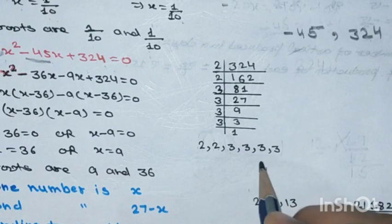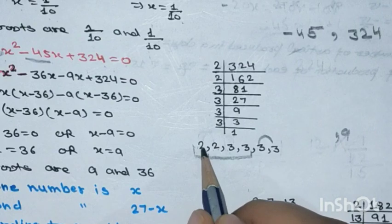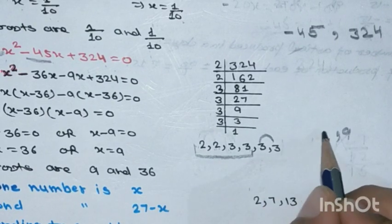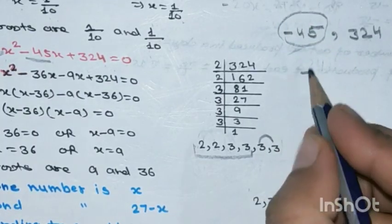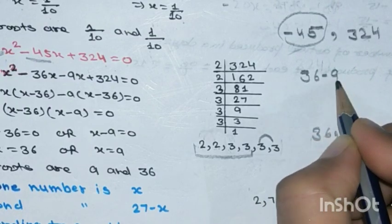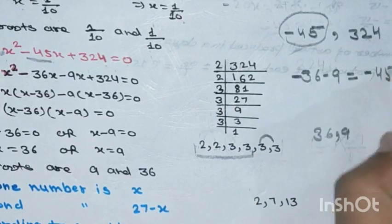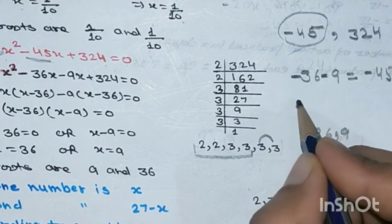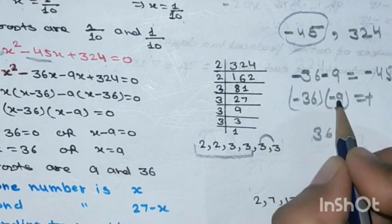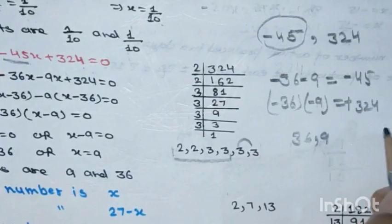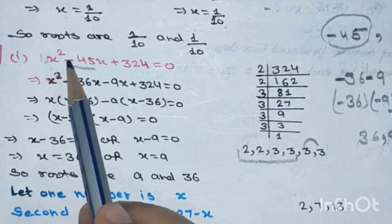Trying 9 and 36: 36 - 9 = 27 — no. But if we take both as negative: -36 and -9, then -36 + (-9) = -45. And (-36) × (-9) = +324. So the factors are -36 and -9. Now a useful rule: when the middle term has a minus sign and the last term has a plus sign, both factors will be negative.